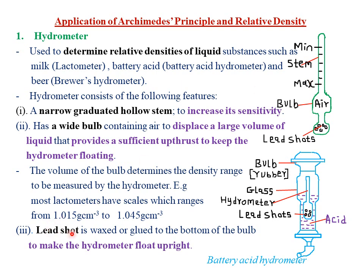The last feature is the lead shots, which are waxed or glued to the bottom of the bulb. The reason is to make the hydrometer float upright. The lead shots increase the total weight of the hydrometer so that there is a balance between the upthrust and the downward forces — due to the weight of the lead shot and the material of the hydrometer — making it float vertically.